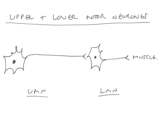Upper motor neurons are entirely within the central nervous system. Lower motor neurons, however, have their cell bodies and the proximal portion of their axons in the CNS, but the more distal portions of their axons are in the peripheral nervous system. This has important clinical consequences because the prognosis for damage to neurons in the CNS is far poorer than for damage to neurons or parts of neurons in the PNS.